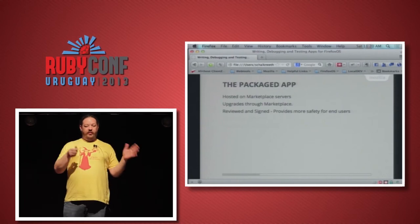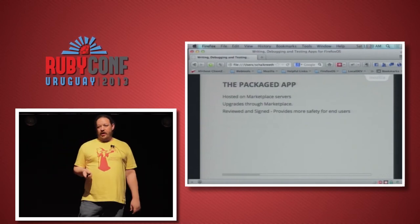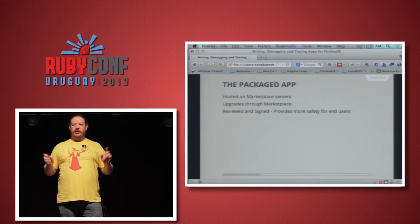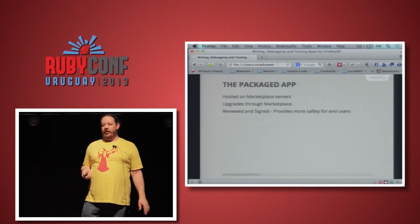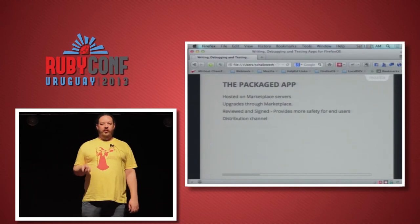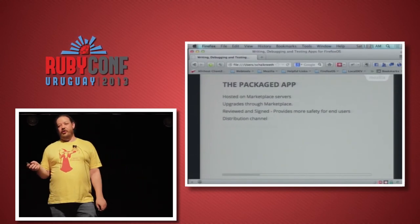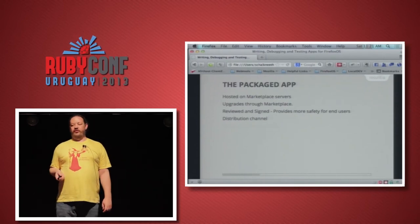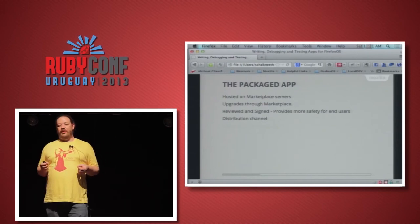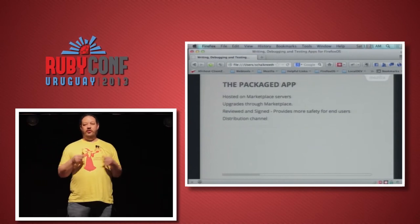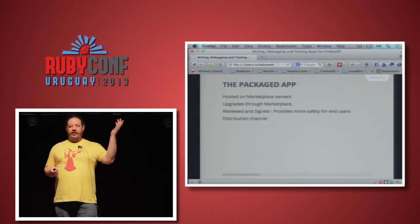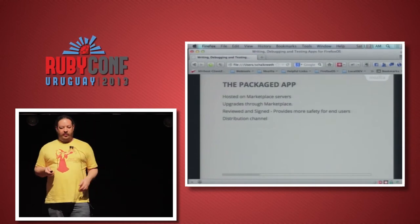Once the review passes and reviewers are happy, the app gets signed. This gives your users a safety net — the code has been checked, it's not going to do weird things or contain malware. The marketplace also provides a distribution channel. What's different about the Firefox marketplace is it's content-driven and content-search-based. You're not searching for an app name — you're searching for a service. Search for 'soccer' and it lists all apps that provide soccer-related content.